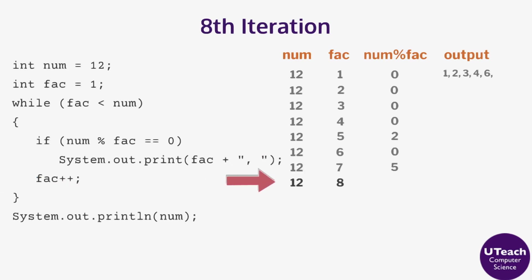For the eighth iteration, fact is less than num so the body of the loop executes. Since 12 mod 8 is 4, the if statement does not execute and there is no output. Fact is incremented to 9. For the ninth iteration, fact is less than num so the body of the loop executes. Since 12 mod 9 is 3, the if statement does not execute and there is no output. Fact is incremented to 10.